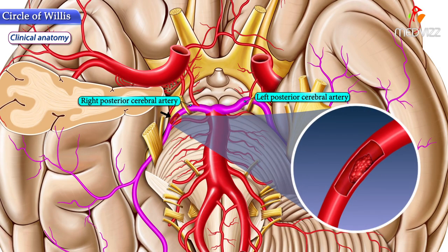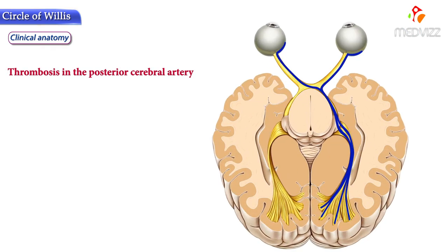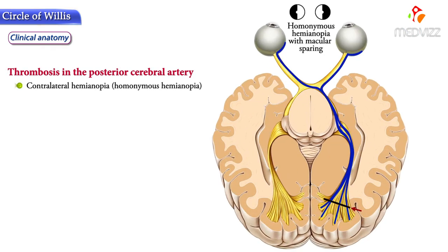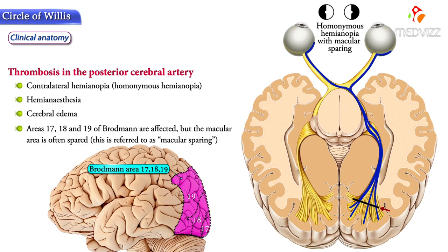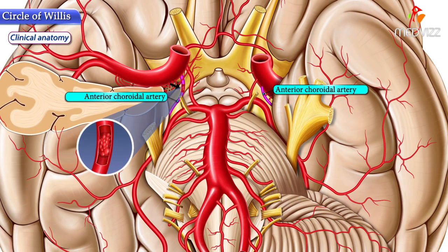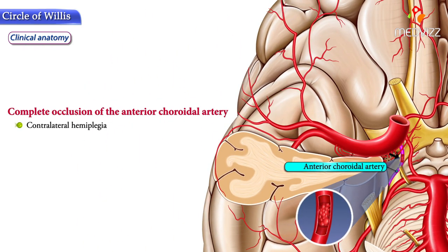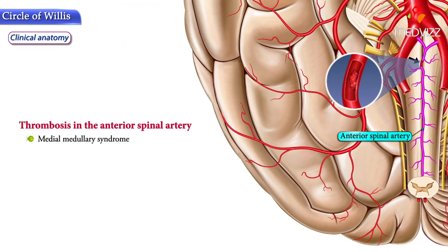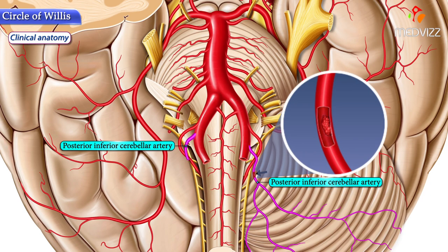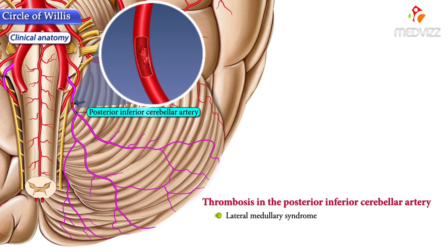Thrombosis in the posterior cerebral artery leads mainly to visual effects, causing contralateral hemianopia, also known as homonymous hemianopia, hemianesthesia, and cerebral edema. Areas 17, 18, and 19 of Brodmann are affected, but the macular area is often spared — this is referred to as macular sparing. Complete occlusion of the anterior choroidal artery may lead to contralateral hemiplegia, hemianesthesia, and hemianopia. Thrombosis of the anterior spinal artery leads to medial medullary syndrome, and thrombosis in the posterior inferior cerebellar artery leads to lateral medullary syndrome.